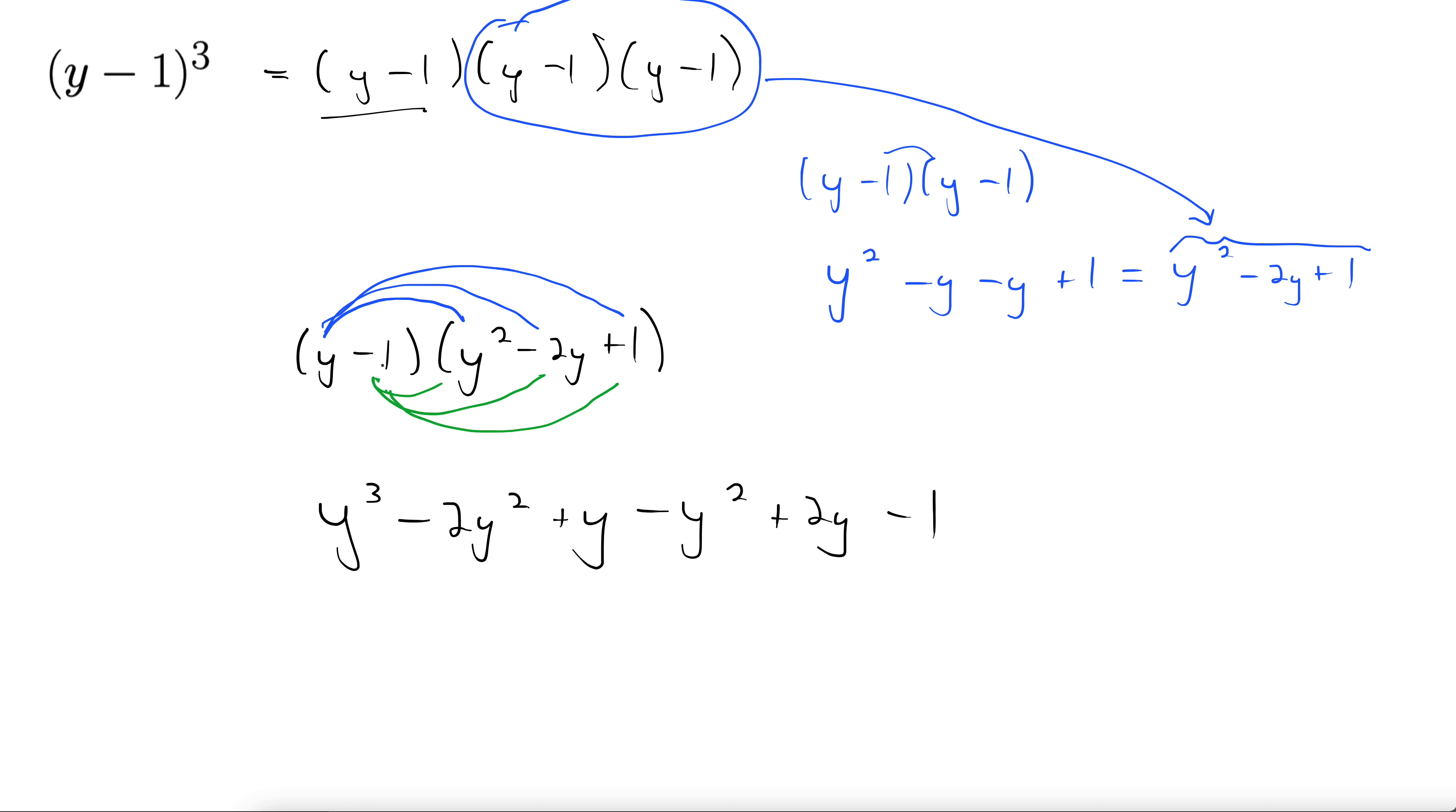Combine some like terms. Let's see what we can do here. We're not done yet, but we're close. There we go, those go together. The y squareds and the y's go together. So this leaves us with y cubed minus 3y squared plus 3y minus 1.